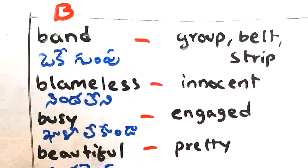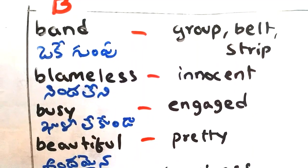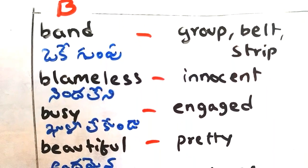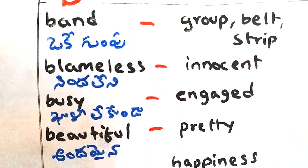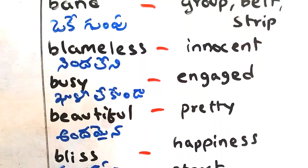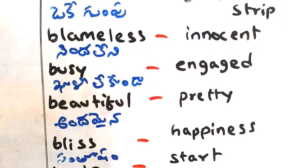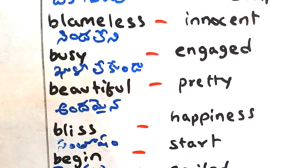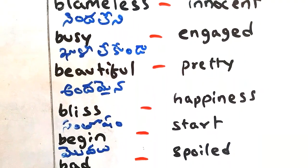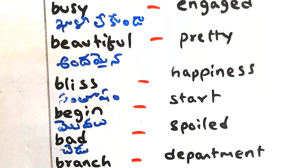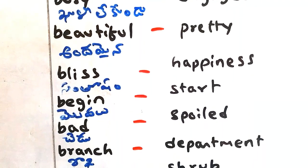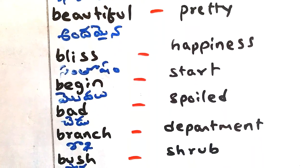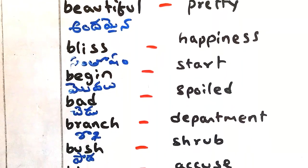Band - gumpu, group. Belt - stripe. Blameless - nindaleni, innocent. Busy - kalilekunda, engaged. Beautiful - andamayana, pretty. Bliss - santosham, happiness. Begin - modaloo, start. Bad - chedu, spoiled.